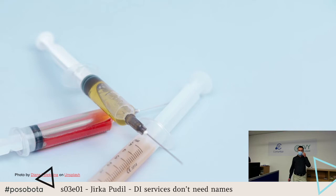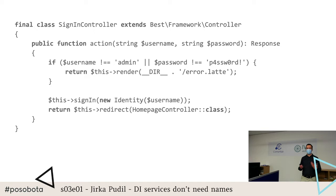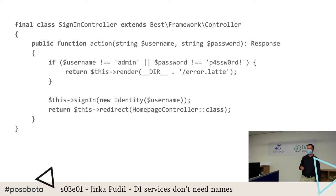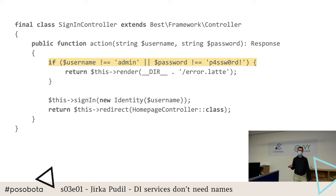This is a very simple authentication controller which receives some credentials via POST, verifies them, and depending on whether they are valid or not, it renders an error page or signs the user in and redirects them to the home page. You might feel that something doesn't belong here in this controller — and it's the authentication logic. It's not the responsibility of the controller. It should delegate this decision to someone else, if only for the logic to be reusable, say in some kind of middleware if you're writing an API layer for the application.